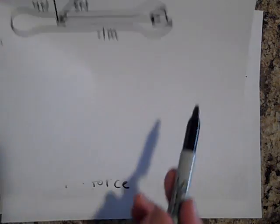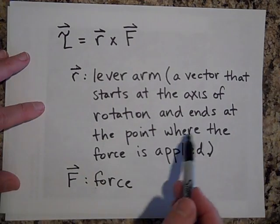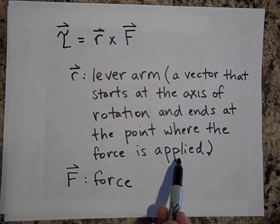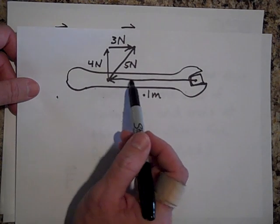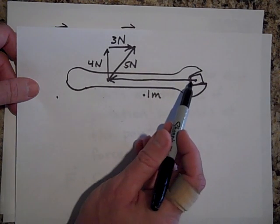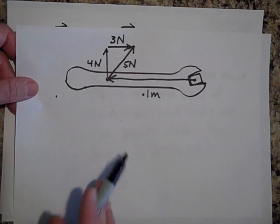That's what's rotating. And it ends at the point where the force is applied. So if the force is being applied right here, then that's where the vector ends. See how it starts and ends at those two locations.